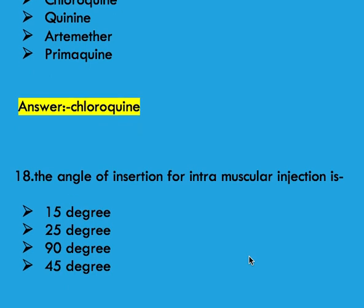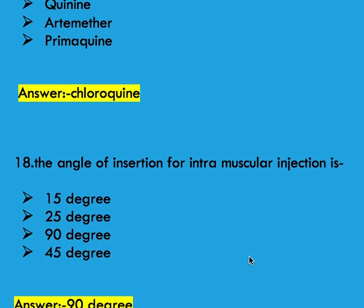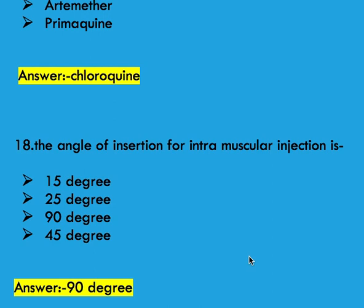Next question: the angle of insertion for intramuscular injection is options 15 degree, 25 degree, 90 degree, and 45 degree. Right answer is 90 degree.